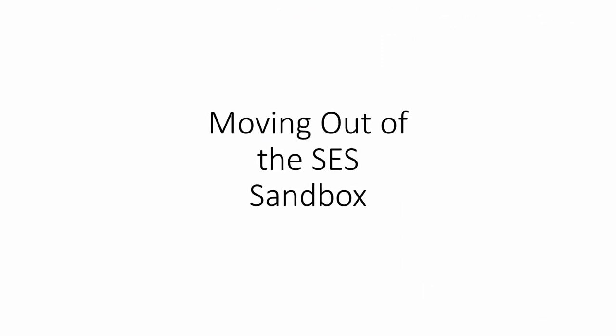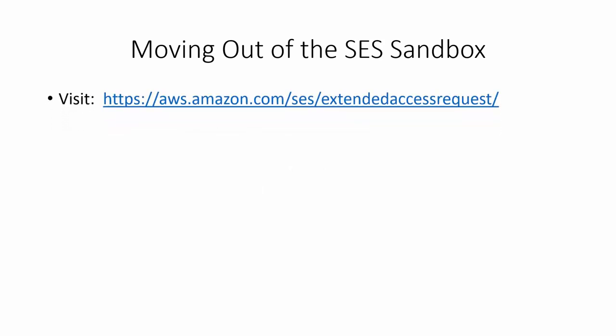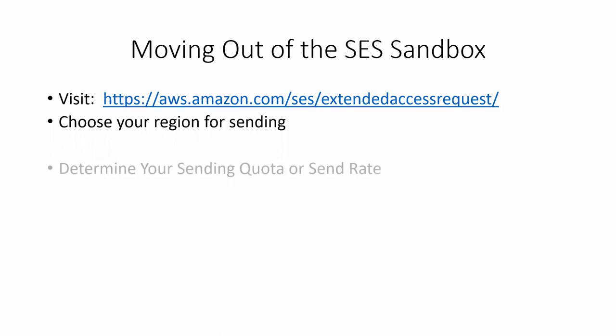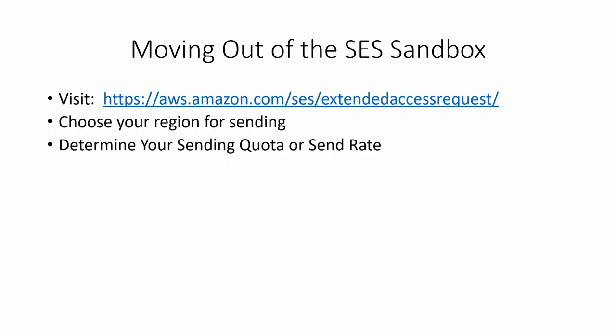In order to begin using Amazon SES you are going to need to move out of sandbox mode. You'll need to visit the link shown, where you'll open a request to move out of the SES sandbox. You'll choose your region for sending, then determine your sending quota or send rate. You can actually request to be out of the sandbox and request a sending increase at the same time.